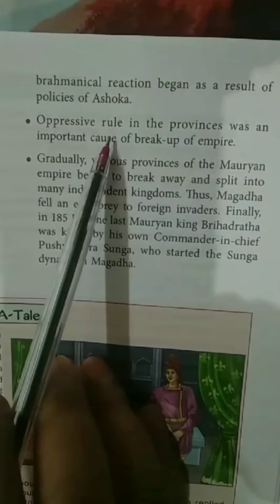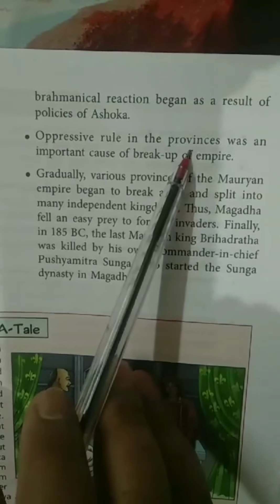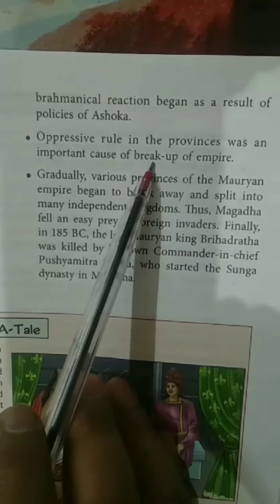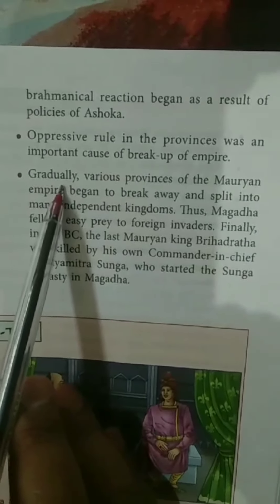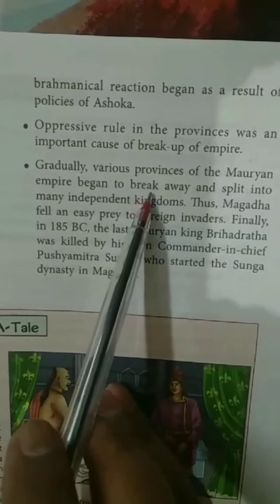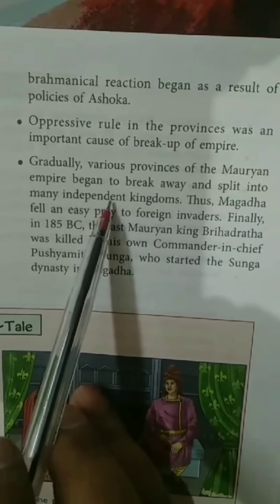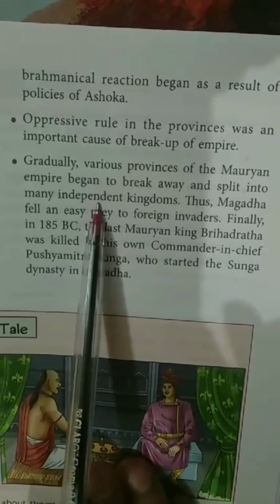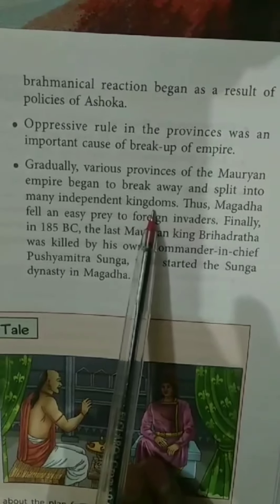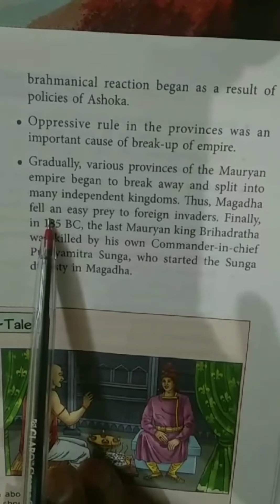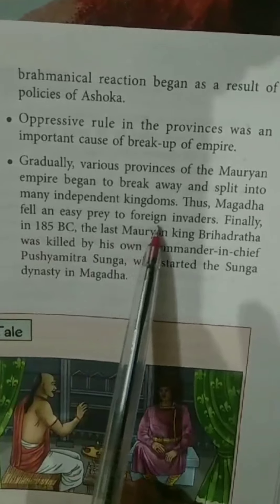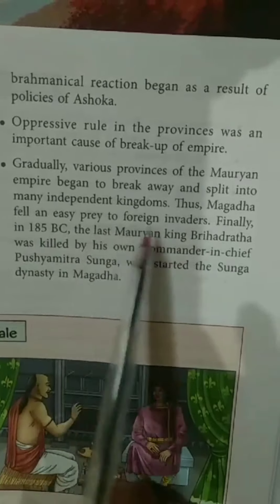Other than this, the oppressive rule in the provinces was also one of the reasons for the breakup of the empire. Slowly, the various provinces of the Mauryan Empire started splitting away and establishing themselves as independent kingdoms. Thus Magadha became weak and it became very easy for foreign invaders to have victory over Magadha.